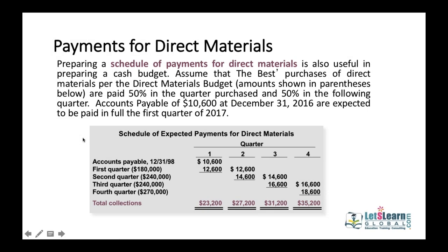Similarly, payments to suppliers follow the same logic. For example, if purchases are $50,000, the payment policy may be 50% in the same month, 30% next month, and 20% two months after the purchase. So if you purchase in the first quarter, you pay 50% that quarter, 30% the next quarter, and 20% in the quarter after that.